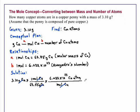And rounding to the correct number of significant digits, which is 3, we have 2.94 times 10 to the 22nd copper atoms.